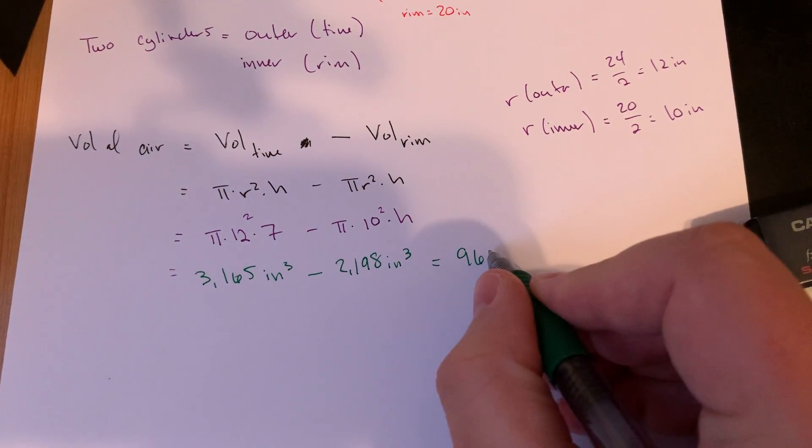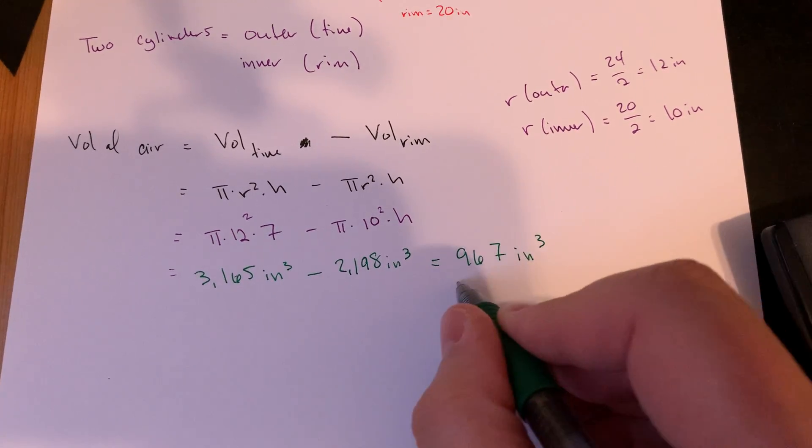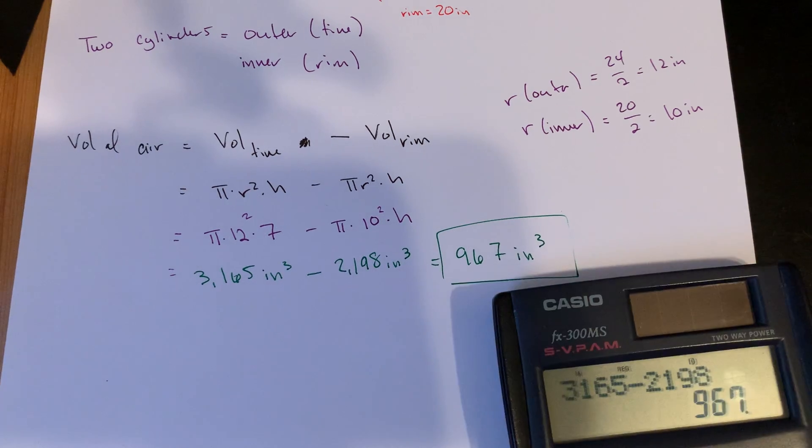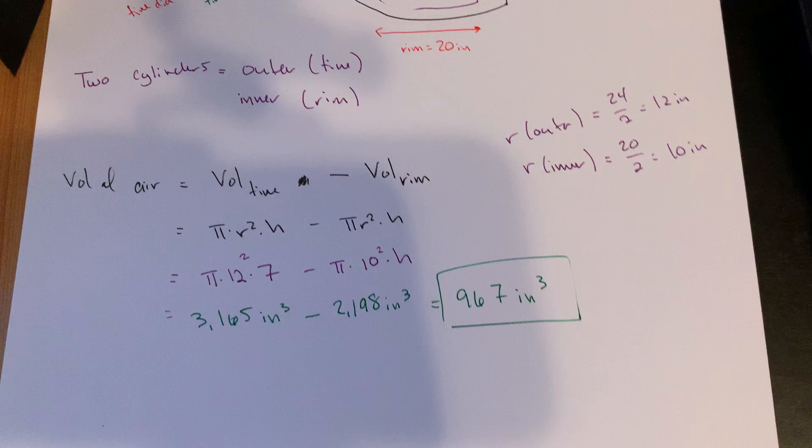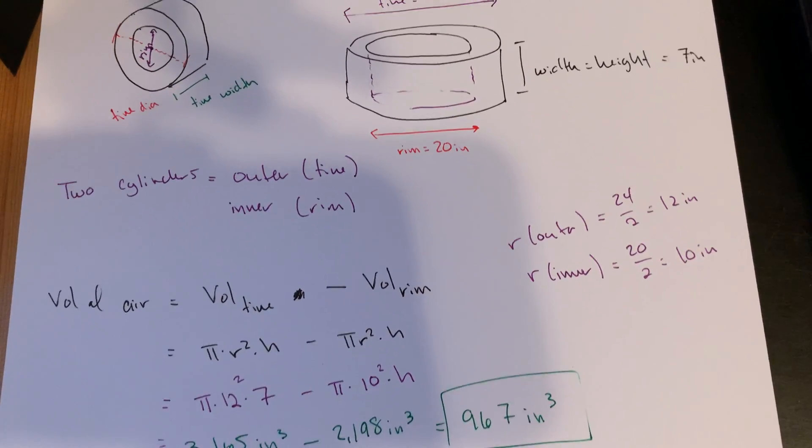So 967. My eyes saw the right number but my mouth did not cooperate. So 967 cubic inches here for the volume of air in the tire. So it's not just, in some sense, the volume of the tire, you would probably just say is 3,165, but if I only want to know what's the volume of the tire that only is where the air exists.